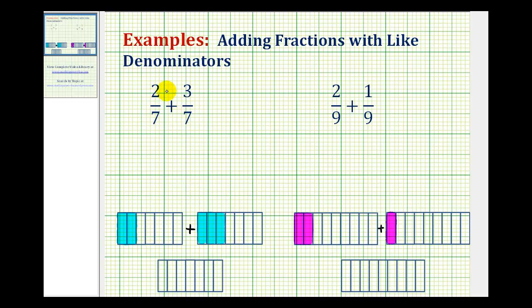So for 2/7 plus 3/7, the denominator is going to stay 7, and the numerator will be 2 plus 3, which is equal to 5. So our sum is 5/7.